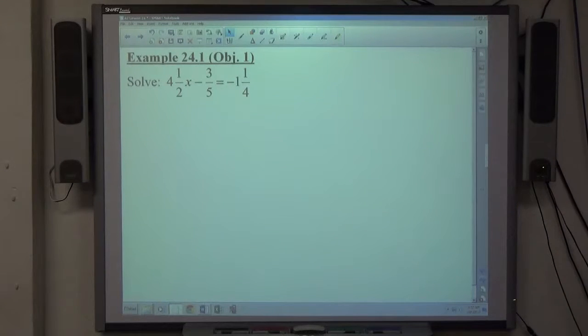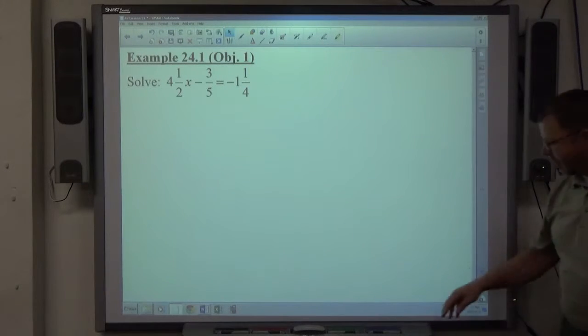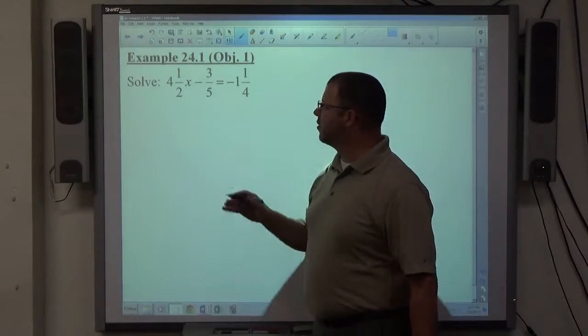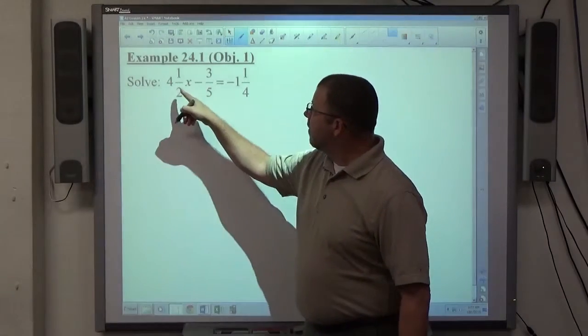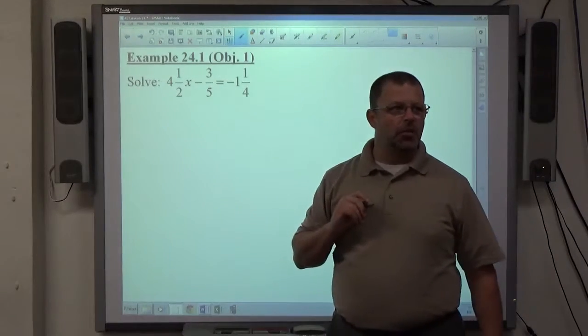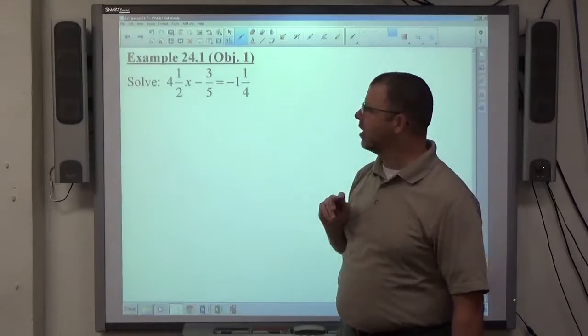Example 1, solve 4 and 1 half x minus 3 fifths equals negative 1 and 1 fourth. Hopefully the first thing everybody's looking at here is we have mixed numbers. We don't like mixed numbers in algebra. Mixed numbers are hard to get along with.